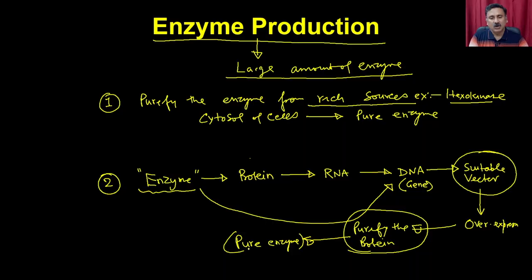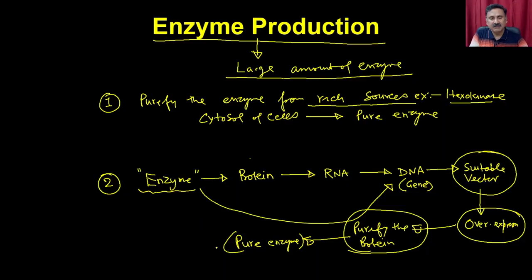Once you purify the protein you get the pure enzyme, which can be used for many applications — for example, studying DNA combinations, running transcription, translation, or replication. You can prepare large quantities because once you have cloned the gene into a suitable vector, you can transform it into a suitable host and make proteins in large quantities.